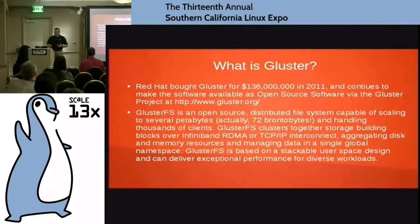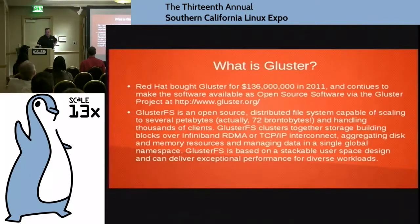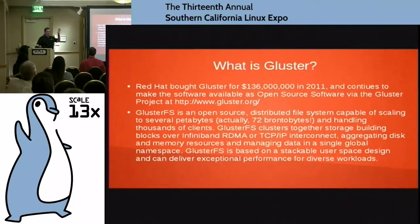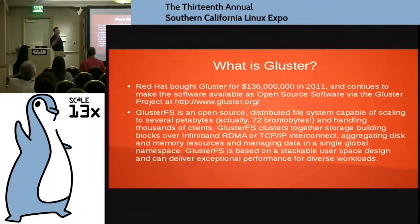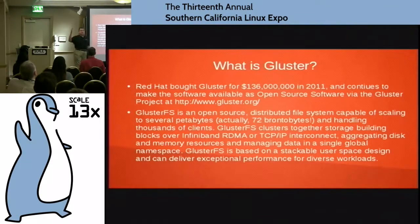So what is the Gluster technology? GlusterFS is an open source distributed file system capable of scaling to several petabytes. Actually, the theoretical limit for Gluster is 72 brontobytes. The progression is gigabytes, terabytes, petabytes, exabytes, yottabytes — and then sodabytes, then brontobytes, and then supposedly one past that that's like insanity bytes.